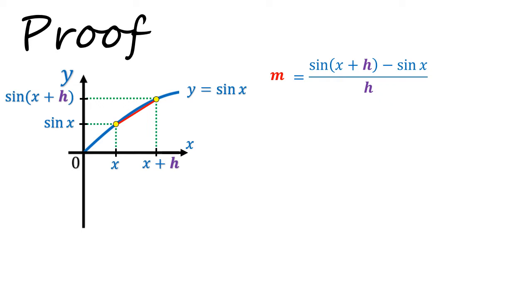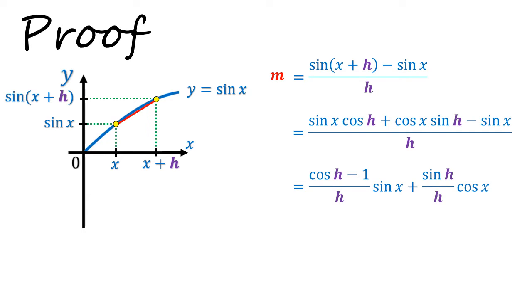Using the addition angle formula, we can expand sin(x + h). That will give us two terms, sin x cos h plus cos x sin h. We now need to express this in terms of sin x and cos x, as what you see here.